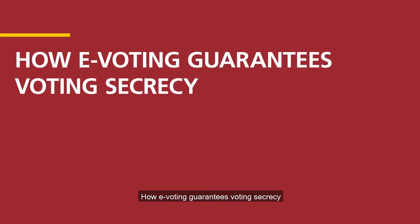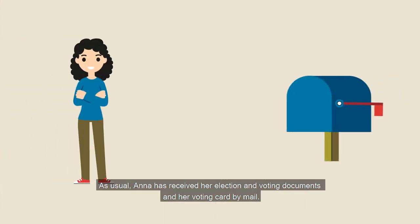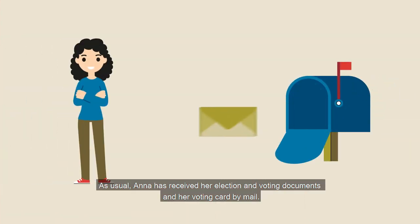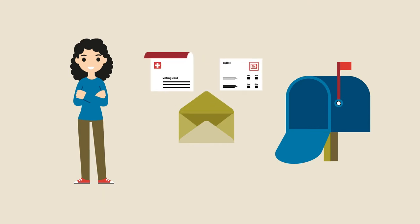How e-voting guarantees voting secrecy. As usual, Anna has received her election and voting documents and her voting card by mail. There are various codes in the documents that she needs for electronic voting.